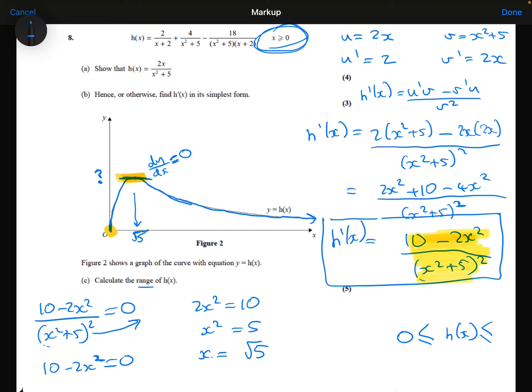So we know that when x is equal to root 5, we're going to have a maximum. If I take that root 5 and substitute it into the function to work out the y coordinate.